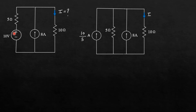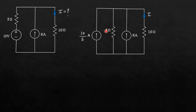I have converted this voltage source into a current source. The value of this current source is V by R, that is 10 by 5. This resistance comes into parallel with this current source. And this is our previous current source.